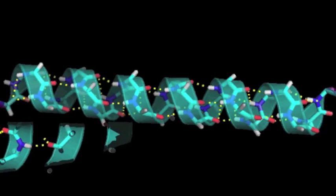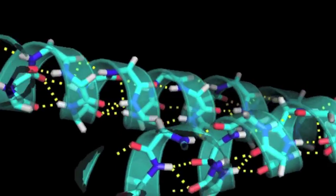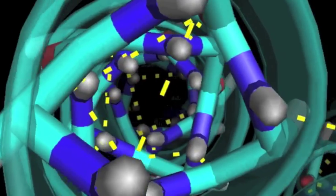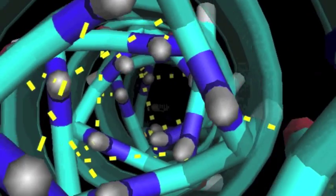If we look down one helix from the N terminus towards the C terminus, we can see the amide hydrogens involved in the helix hydrogen bonds pointing towards us.